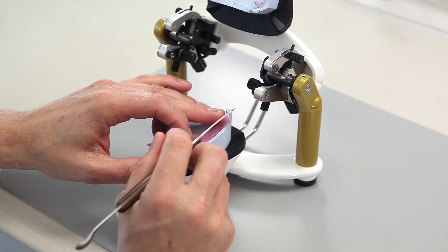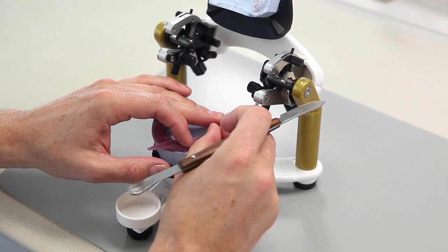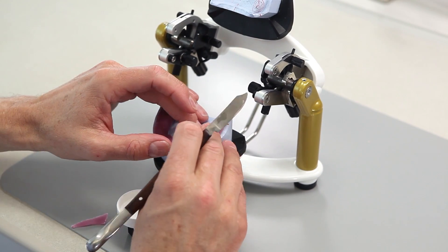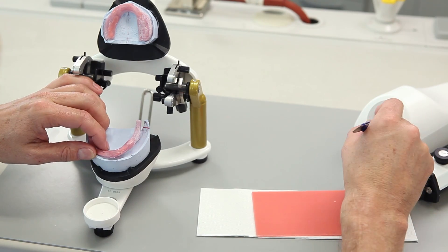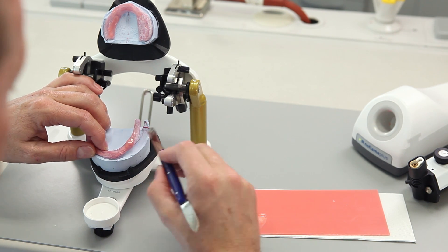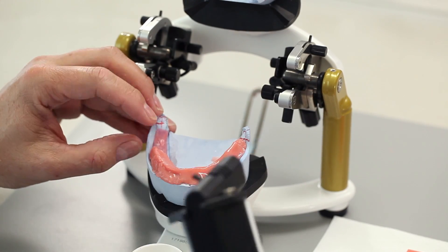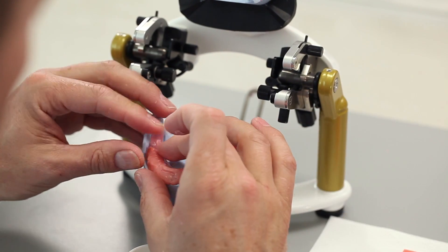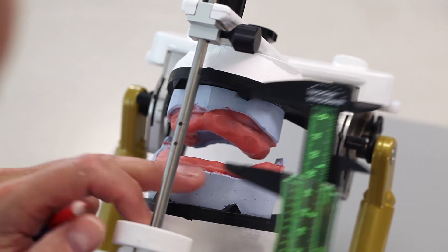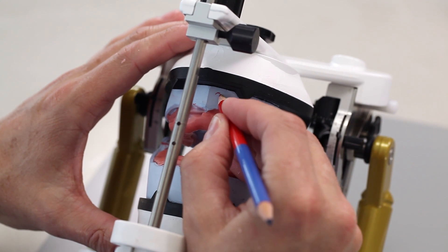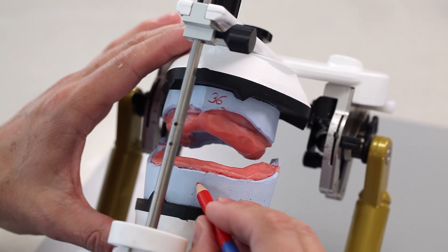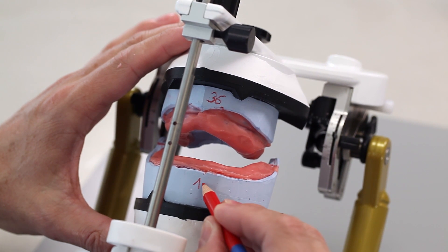Precise and stable resin plates made of tray material facilitate the try-in and prevent deformation. Ideally, use a hard wax with a high softening point for setting up the teeth. Determine the inter-vestibular distance and note down the value measured on the edge of the maxillary model and half the value on the edge of the mandibular model. In this way, you determine the position of the occlusal plane in the anterior region.